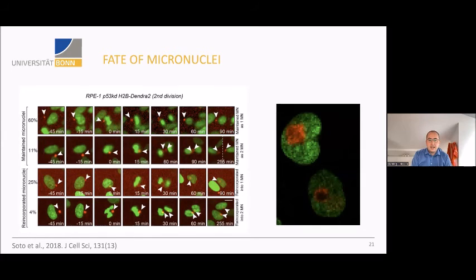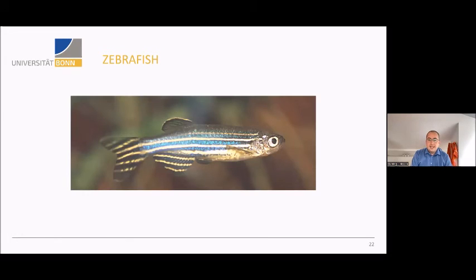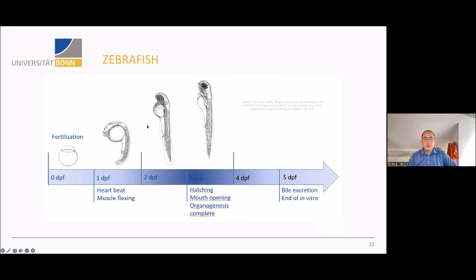We plan to use photoconvertible dyes to label specific chromosomes and follow them during mitosis. We are also establishing the zebrafish model: zebrafish offer the benefit of a whole organism, and when looking at larvae we can assess developmental effects with a transparent organism making evaluation easier. A particularly charming benefit is that until day five post-fertilization, zebrafish are formally classified as in vitro systems, so we don't need full animal testing regulations while still working with a whole organism.